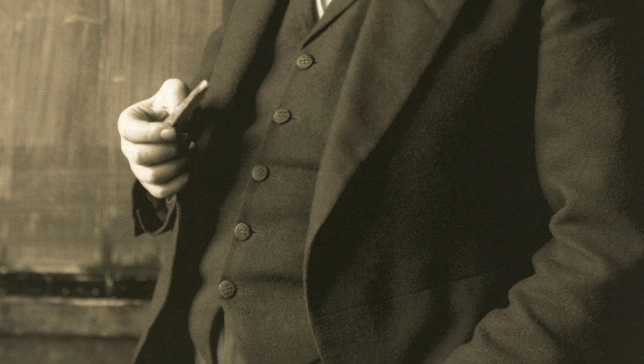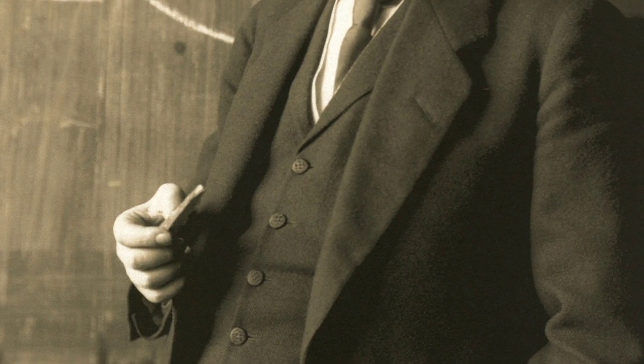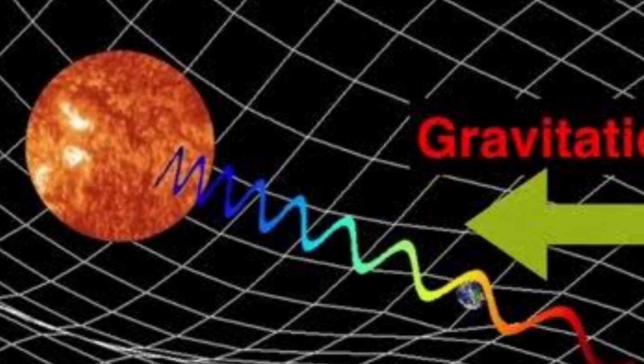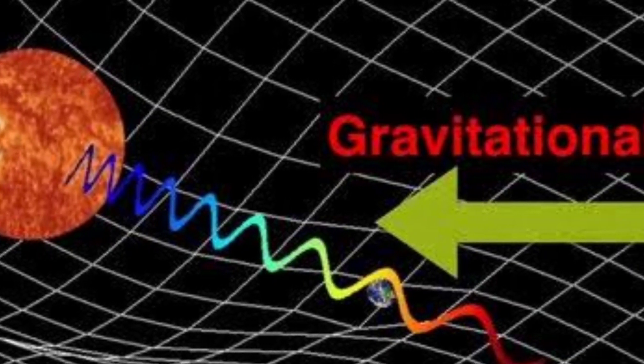In the case of light, when it travels near a massive object, its path appears to curve because the spacetime around the object is curved. This curvature alters the trajectory of light, making it appear as though gravity is affecting it.